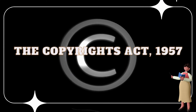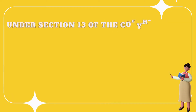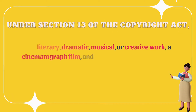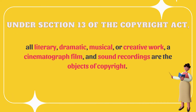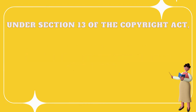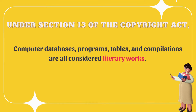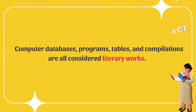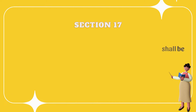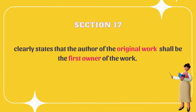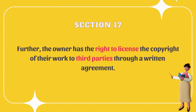The Copyright Act 1957: under Section 13, all literary, dramatic, musical, or creative works, cinematograph films, and sound recordings are objects of copyright. Computer databases, programs, tables, and compilations are all considered literary works. Section 17 clearly states that the author of the original work for which protection under copyright has been obtained shall be the first owner of the work, and the owner has the right to license the copyright to third parties through a written agreement.